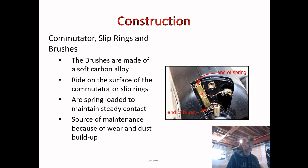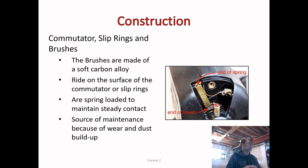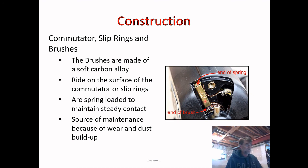The commutator and slip rings provide an electrical connection between the fixed external wiring and the rotating armature windings. We can't just hardwire the terminal leads to the coil ends because as soon as it starts to spin it would coil up and break. The brushes are mounted to the chassis so they don't rotate, but they make contact with the rotating commutator. They are made of a soft carbon alloy, are spring-loaded to maintain steady contact, and are a source of scheduled maintenance because they wear down and leave dust.